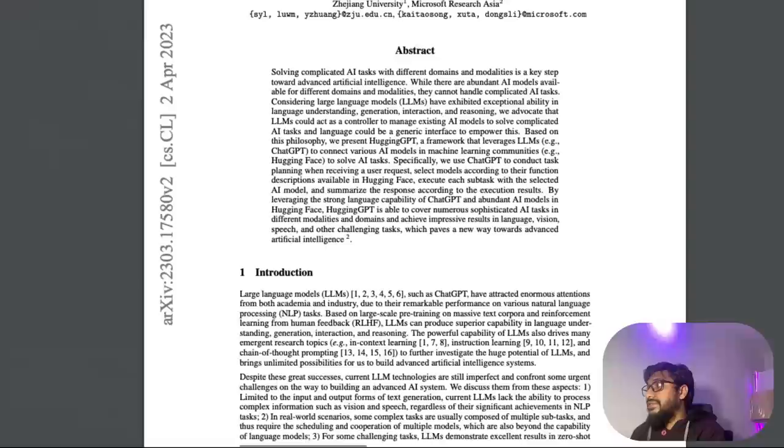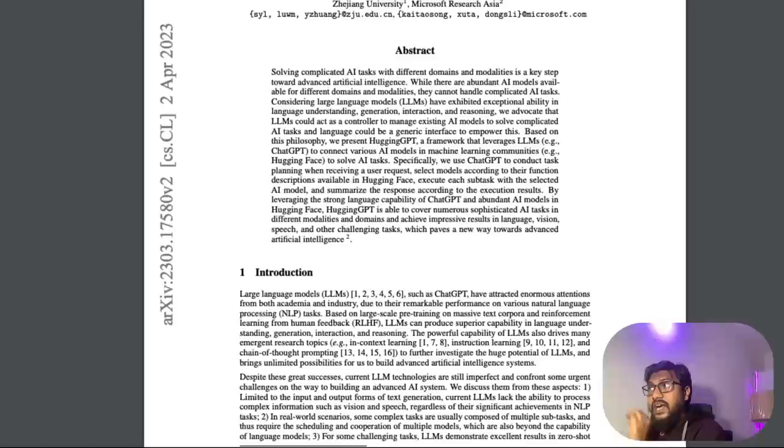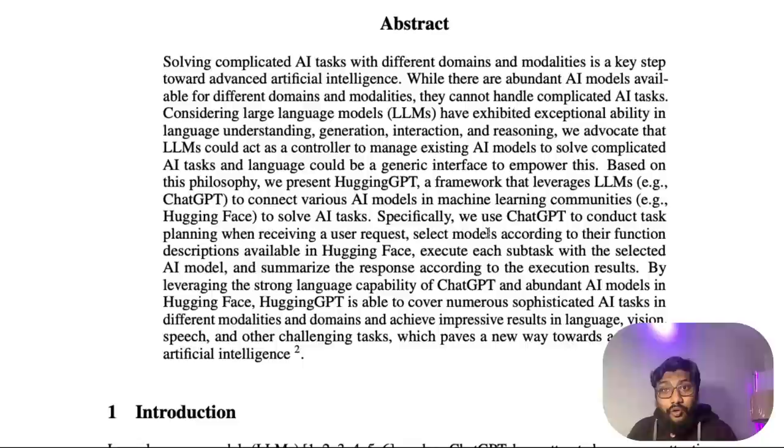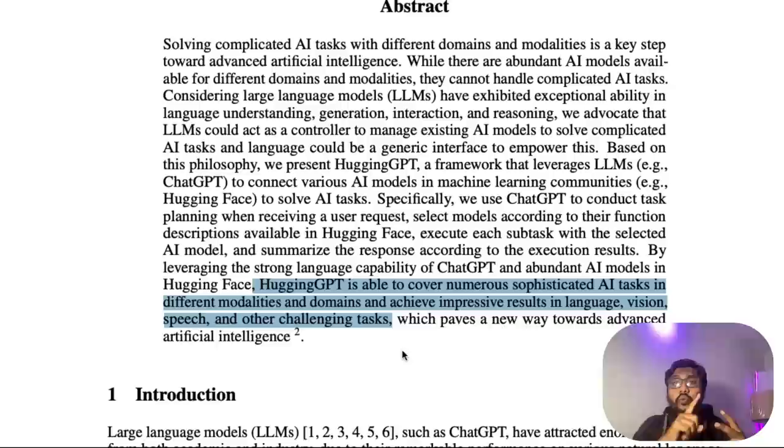The HuggingGPT paper has almost kind of cracked this thing. To fully understand the system, we have to go to the HuggingGPT and understand this. Solving AI tasks with ChatGPT and its friends in HuggingFace. What this paper ideally explores is: can we connect this ChatGPT or GPT-4 or GPT-3.5 with the existing largest base of open source models. HuggingFace has its own endpoint like API, so it doesn't need a GPU to run it. What their final system HuggingGPT is able to cover is numerous sophisticated AI tasks in different modalities.